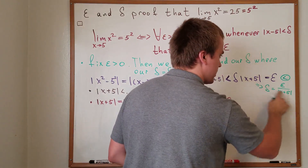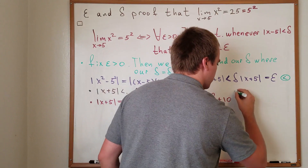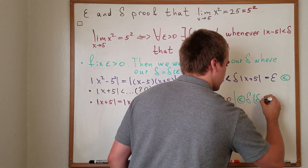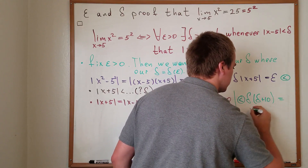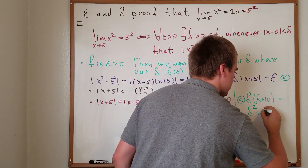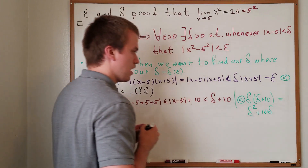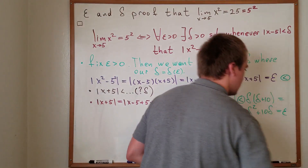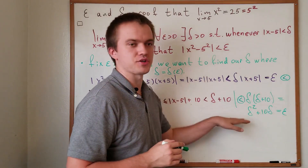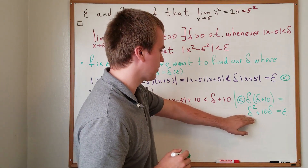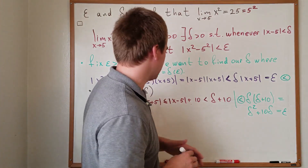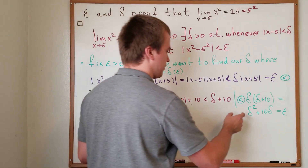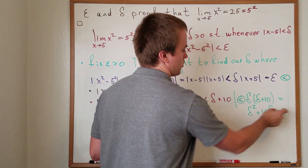So plugging this in, we'd get delta times (delta plus 10), which equals delta squared plus 10 delta, and setting this equal to epsilon. But I don't like this expression, because I would need to solve a quadratic equation, and that's not an easy approach. So we need to find another way to write delta in terms of epsilon.